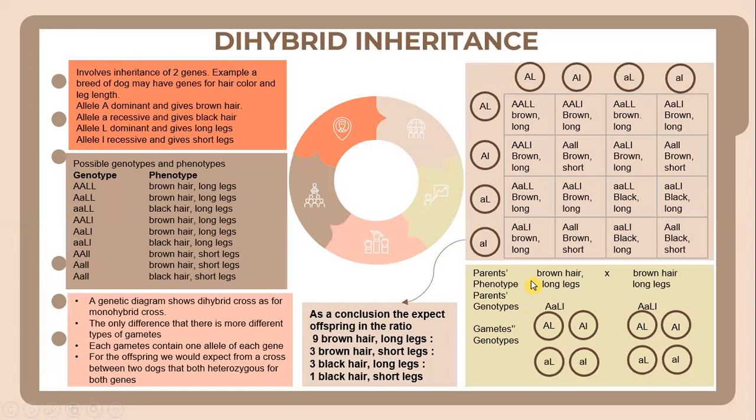Let's move on to dihybrid inheritance. Dihybrid inheritance is the inheritance pattern of two different traits that are controlled by different gene loci. In other words, it involves the simultaneous inheritance of two pairs of alleles for two different characteristics.